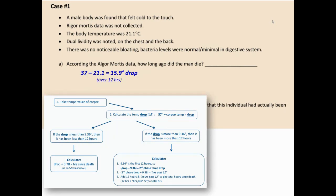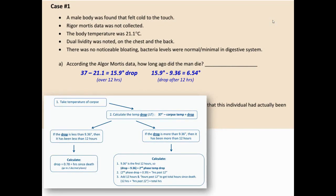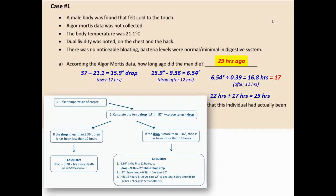First, calculate the drop in temperature: 37 degrees minus 21.1 degrees gives a drop of 15.9 degrees. That is greater than 9.36, meaning it's been over 12 hours. Now calculate extra time: 15.9 minus 9.36 equals 6.54 degrees drop after the 12-hour mark. Then 6.54 divided by 0.39 gives approximately 16.8 — about 17 hours after the first 12 hours. Final time: 12 plus 17 equals 29 hours, so the man died 29 hours ago.